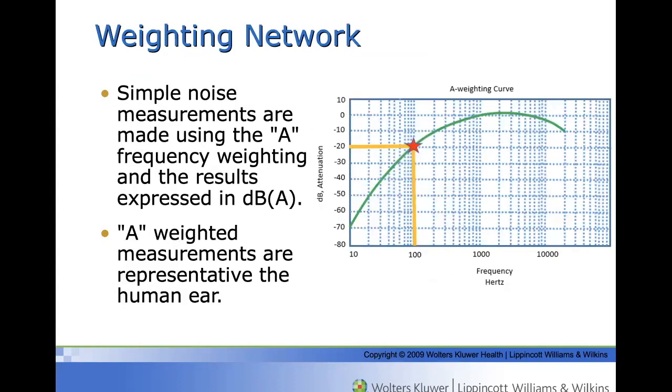Most simple noise measurements are made using the A frequency weighting, and the results are expressed in dB. When a measurement is A weighted, the sound level meter is responding in a similar way to the human ear, being more attenuated in the lower frequencies. The image shows the A weighting filter response, removing low frequency sounds from the response.